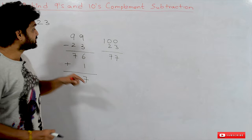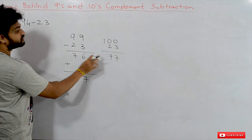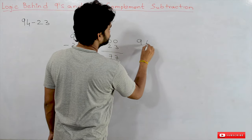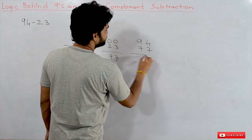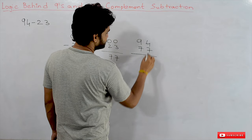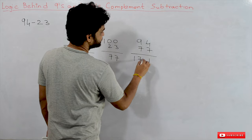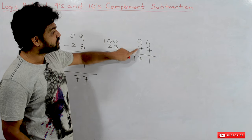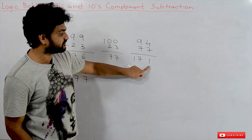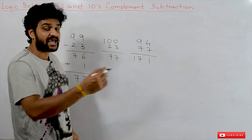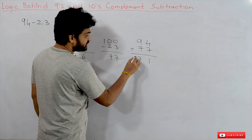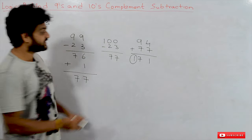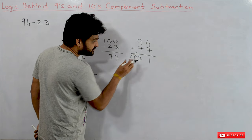The next step in 10s complement subtraction is to add the 10s complement result we obtained — which is 77 — to the minuend. The minuend is 94. So we add 77 to 94. The result of that addition is 177. We have said that if there is a carry in the addition, we have to eliminate that carry digit — we have to eliminate this 1.